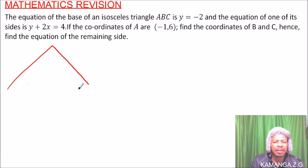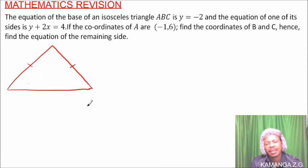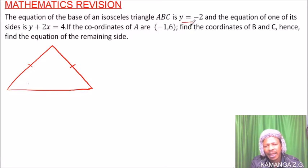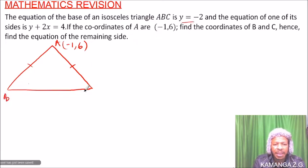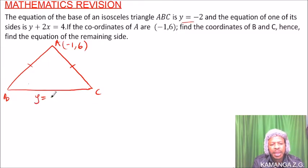In this isosceles triangle, the two equal sides are marked. We've been told that one equation is y = -2. Since the coordinates of A are (-1, 6), A does not lie on this line, so this line must be BC. We can deduce that BC is the line whose equation is y = -2.